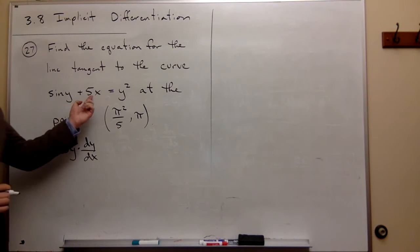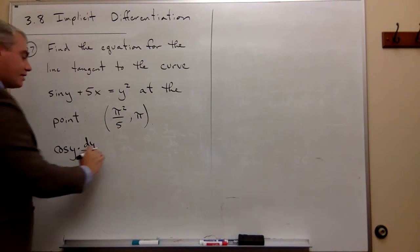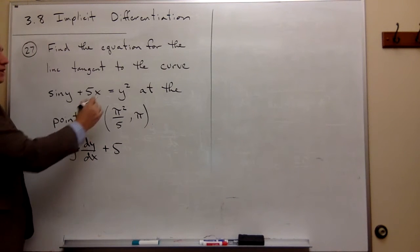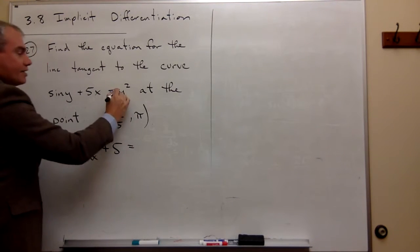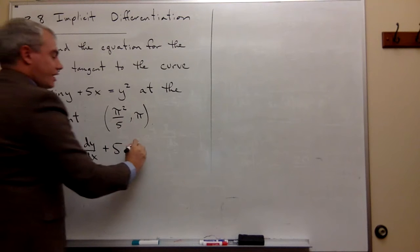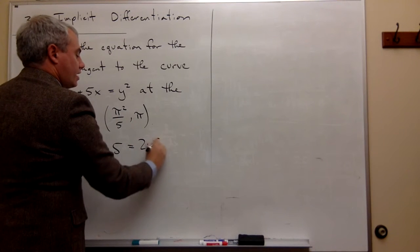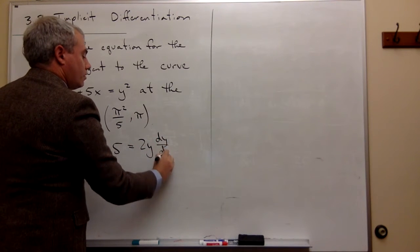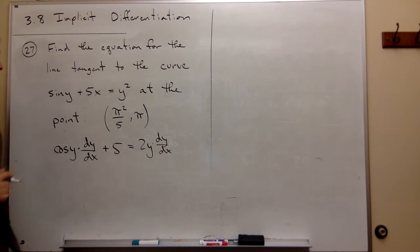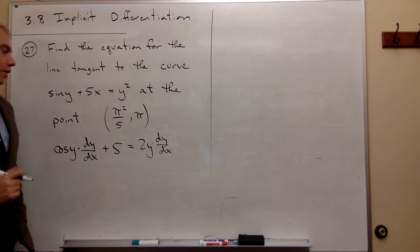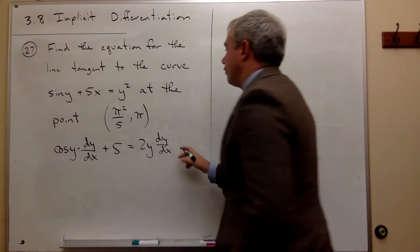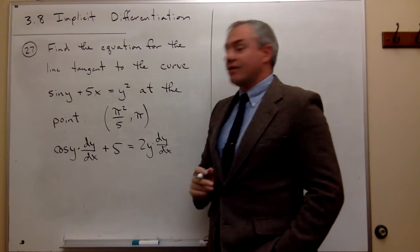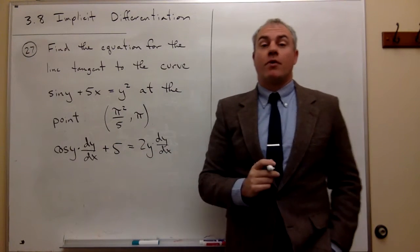If I take the derivative of 5x I just get 5. And if I take the derivative of y squared I get 2y times dy/dx. So I've taken the derivative but I haven't solved for dy/dx yet.